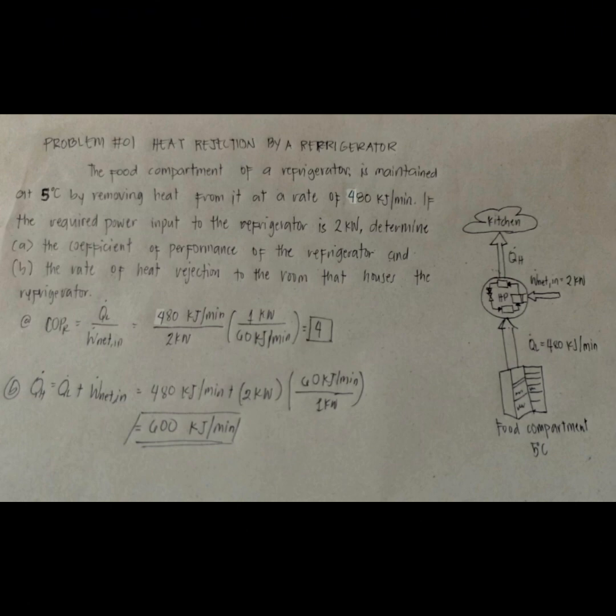Heat is removed from it at a rate of 480 kilojoules per minute. If the required power input to the refrigerator is 2 kilowatts, determine: (a) the coefficient of performance of the refrigerator, and (b) the rate of heat rejection into the room that houses the refrigerator.